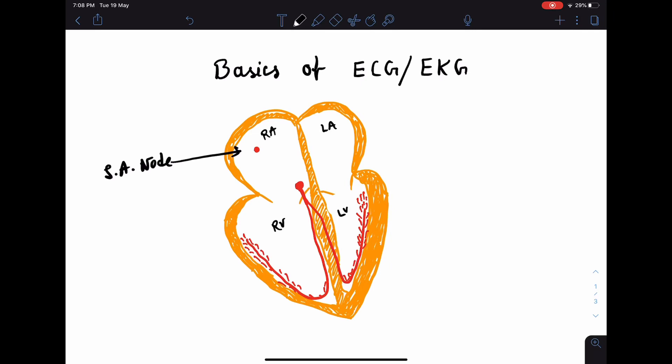After that, it spreads towards the AV node and then to the bundle of HES. The AV node and the bundle of HES constitute the AV junction. After crossing the AV junction, the impulse runs through the bundle of HES, which gets divided into right and left branch.